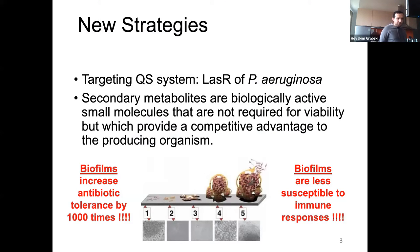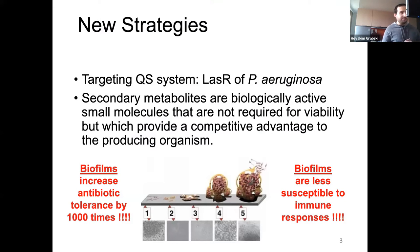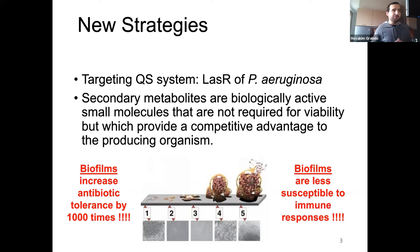So how do we solve that problem? One strategy is to target the quorum sensing system. The quorum sensing system is like the communication system of the bacteria — they communicate with each other, release signaling molecules, and that way control their social behavior. One of those behaviors is the creation of biofilms. Think of biofilms as a castle that allows bacteria to defend against antibiotics. Biofilms increase antibiotic tolerance by a thousand times and are also less susceptible to immune responses.